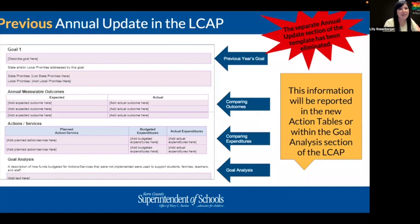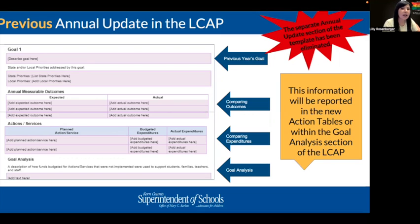Let's begin with what has changed. In the previous LCAP, the annual update was a separate document which included the previous year's goal, a comparison of annual measurable outcomes, comparison of budgeted and actual expenditures, and successes and challenges of implementation. This separate annual update section has been eliminated. Instead, this information will be reported in the new action tables or within the goal analysis section of the LCAP — same information, just in different places.